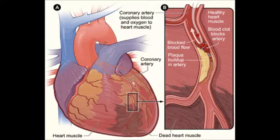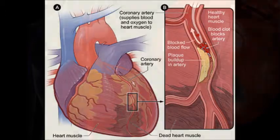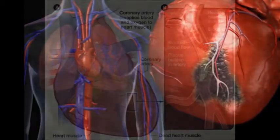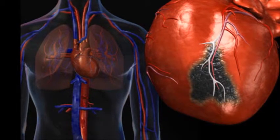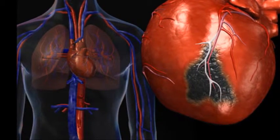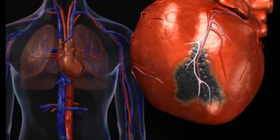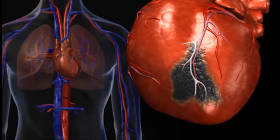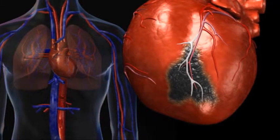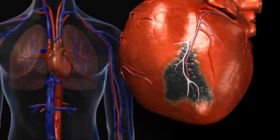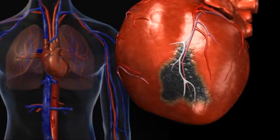One of the most serious and life-threatening results of coronary heart disease is heart attack. The sudden occurrence of a total block in a coronary artery diminishes blood supply to the heart, and consequently the cardiac muscle begins to die.